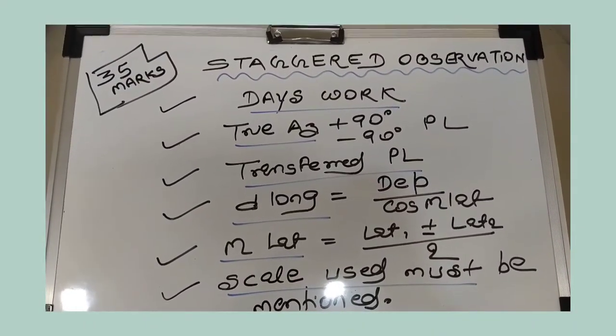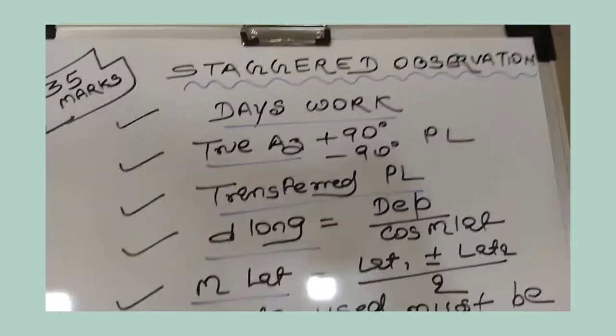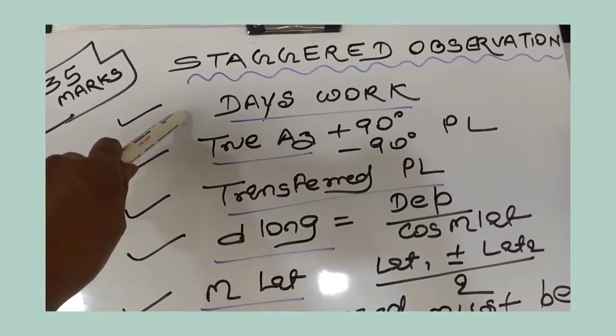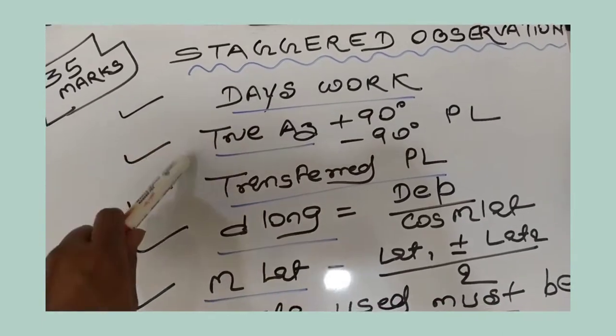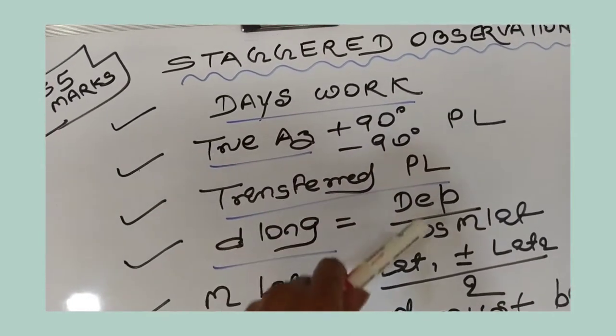Hello people, we are discussing this staggered observation question which comes for 35 marks in celestial navigation paper. To solve this question, you must know how to solve the day's work question, how to get the true azimuth, and from true azimuth how to get PL plus 90 degrees and minus 90 degrees.